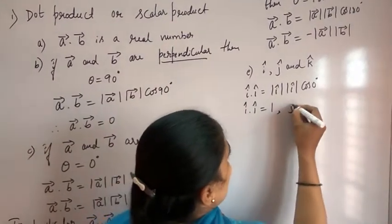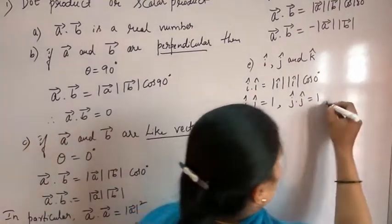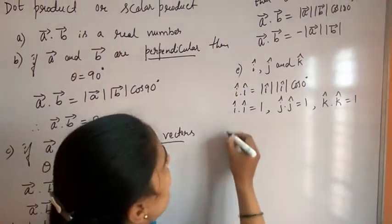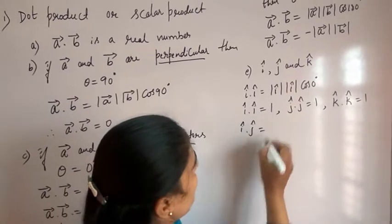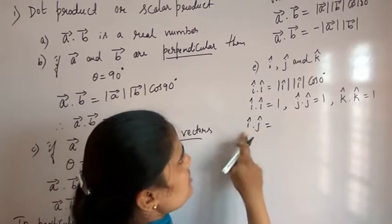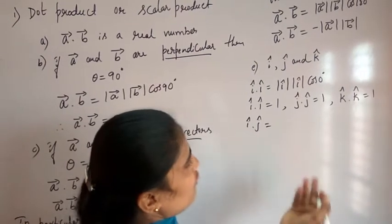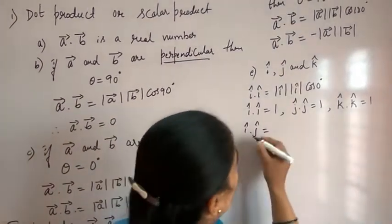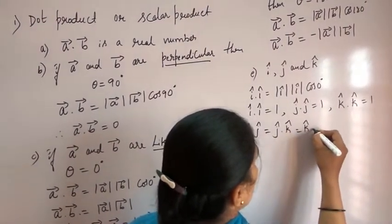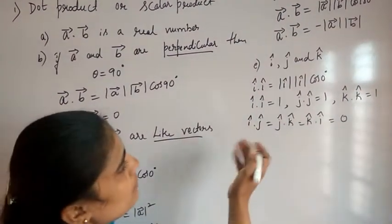Similarly, j cap dot j cap equals 1, and k cap dot k cap equals 1. For i cap dot j cap: i cap is along the x-axis and j cap is along the y-axis — since these two are mutually perpendicular, theta equals 90 degree. Applying the definition, cos 90 degree equals 0, so i dot j, j dot k, and k dot i all equal 0.